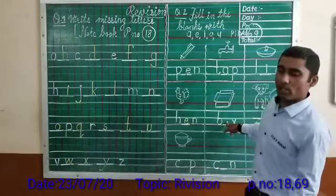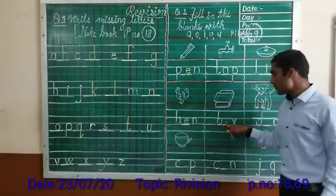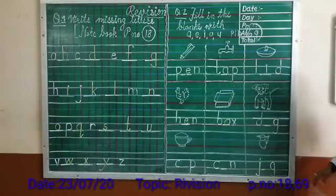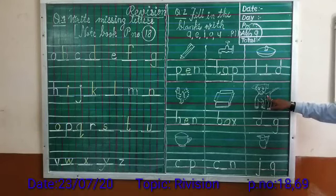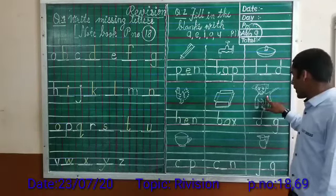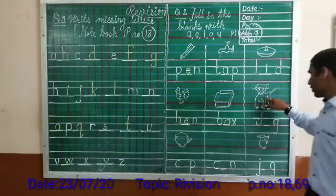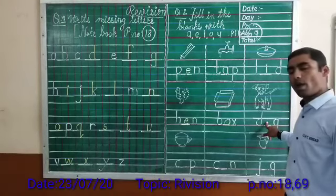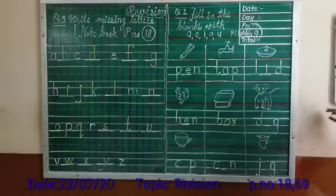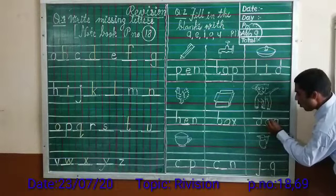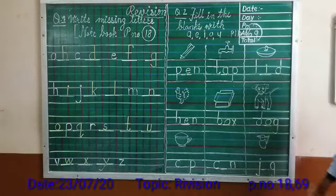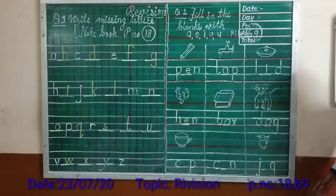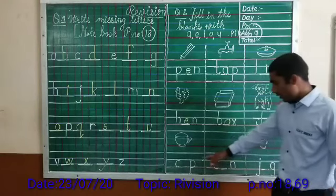Next one — what is this? Box. B, O, X — box. What is missing here? O. B, O, X — box. Next one is dog. The sound is off and O says O — D, O, G — dog.